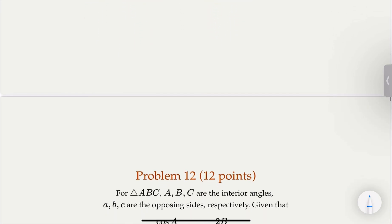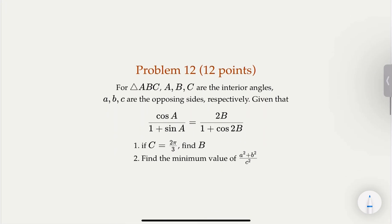Now let's return to the problem. We're given a condition involving angles A and B. Notice that C is not in the given equation — only A and B appear. But we know that A + B + C = 180 degrees (π), so C = π − (A + B). That is good to know as we set up the solution.